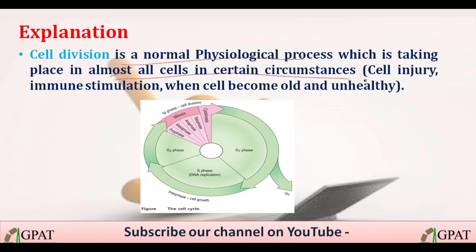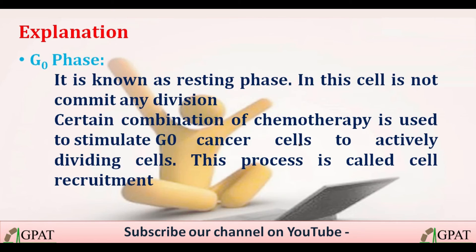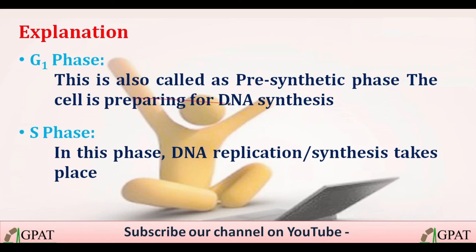Cell division is a normal physiological process occurring in almost all cells under circumstances such as cell injury, immune stimulation, or when cells become old and unhealthy. The cell cycle phases are: G1, S, G2, prophase, metaphase, anaphase, and telophase. G0 phase is the resting phase where the cell does not commit to any division; certain chemotherapy combinations stimulate G0 cancer cells into actively dividing cells — a process called cell recruitment.